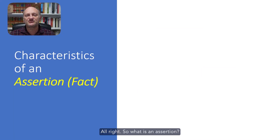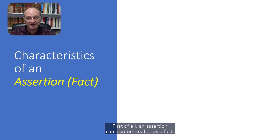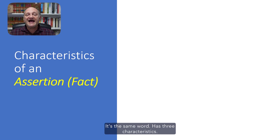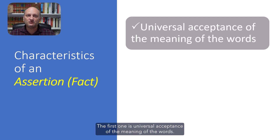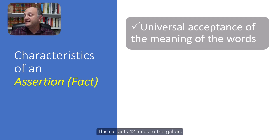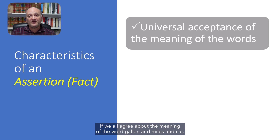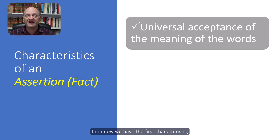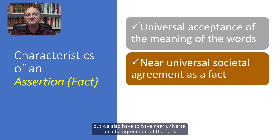So what is an assertion? First of all, an assertion can also be treated as a fact. We say assertion or fact — it's the same word — and it has three characteristics. The first one is universal acceptance of the meaning of the words. So let's use an example: 'This car gets 42 miles to the gallon.' If we all agree about the meaning of the words gallon, miles, and car, then we have the first characteristic.